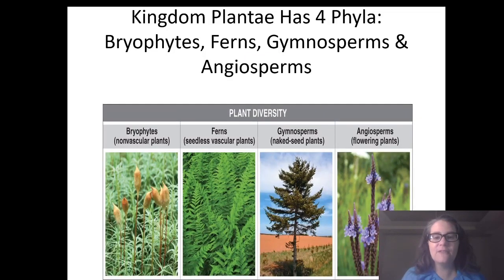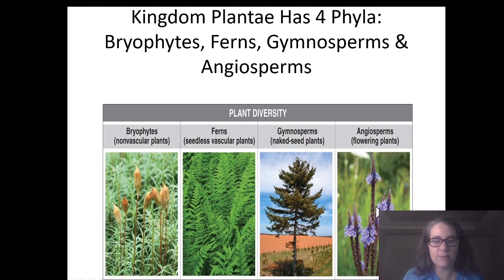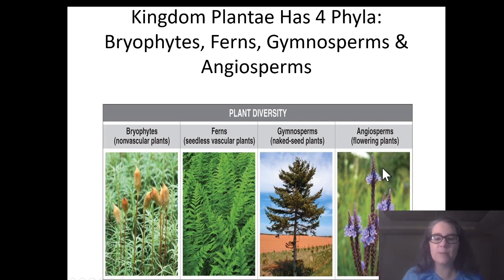Within kingdom Plantae, we have four phyla. Bryophytes include mosses, hornworts, and liverworts. Ferns include ferns and pteridophytes like horsetails. Gymnosperms, also known as conifers, are your cone-producing trees and plants. And angiosperms are your flowering and fruiting plants. Angiosperms are the most diverse group by number and diversity on Earth, and most of our agricultural products — fruits, grains, and such — belong to this group.